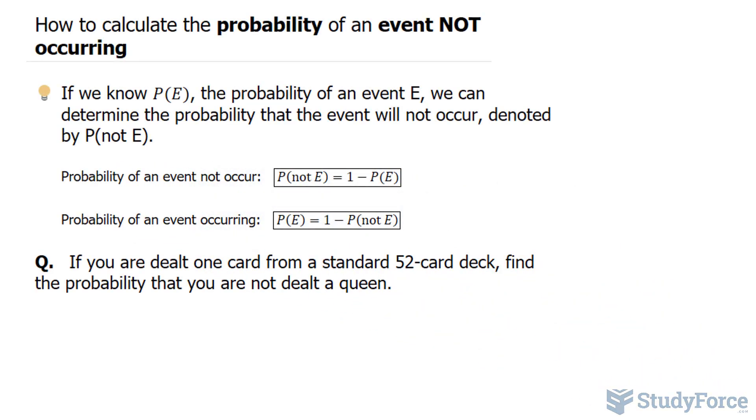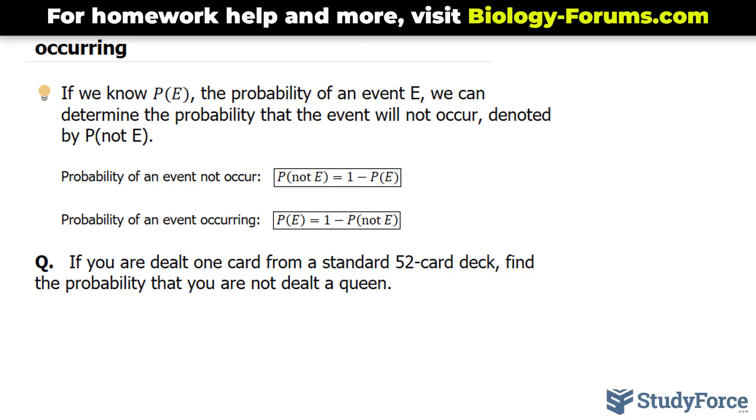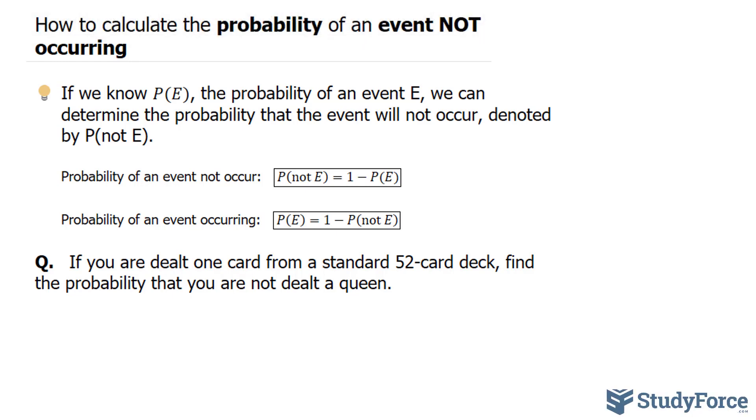In this quick tutorial, I'll show you how to calculate the probability of an event not occurring. Calculating these probabilities can be pretty easy, and it involves finding the probability of the event occurring and taking one minus that probability.